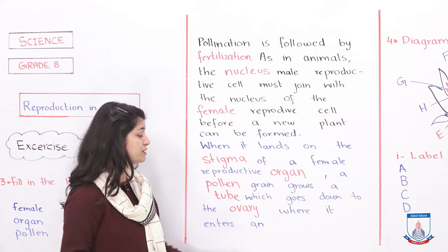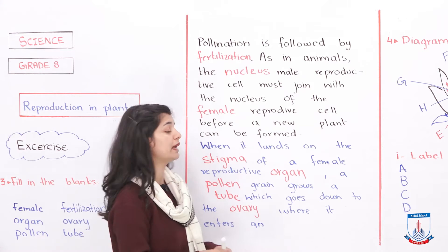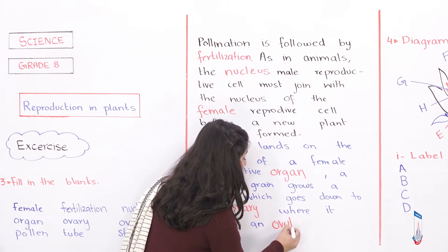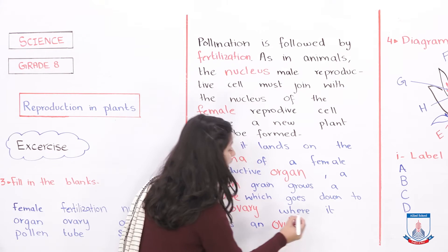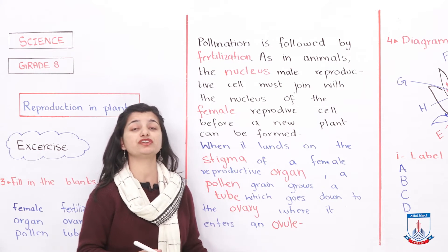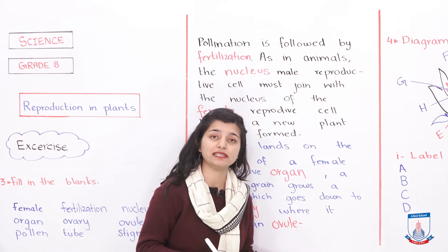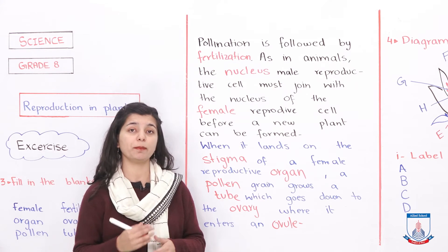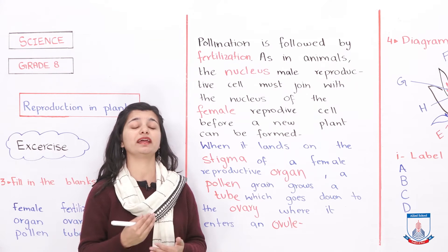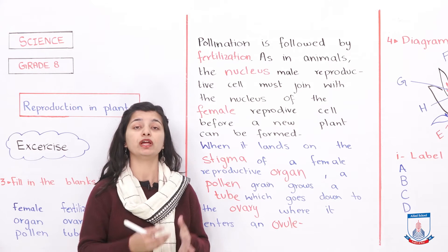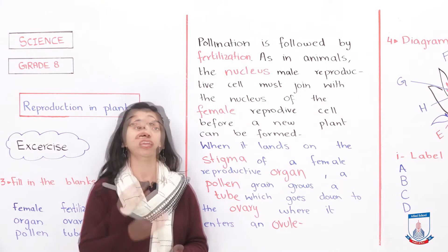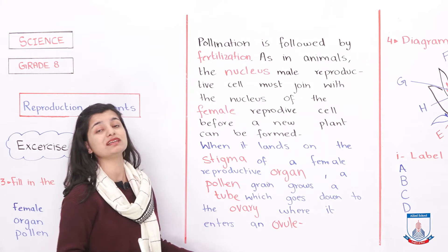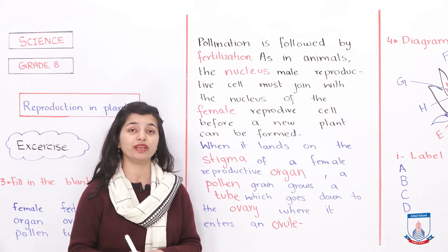If you remember the diagram, the ovary has ovules inside it and the pollen is fertilized there, resulting in fertilization, then a new seed, and eventually germination. The purpose of this entire passage is to understand how fertilization works and to fit the terms in the right places.